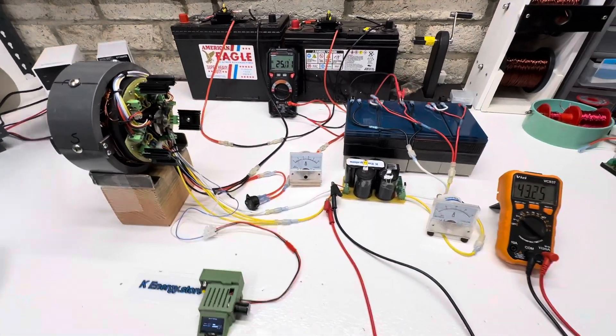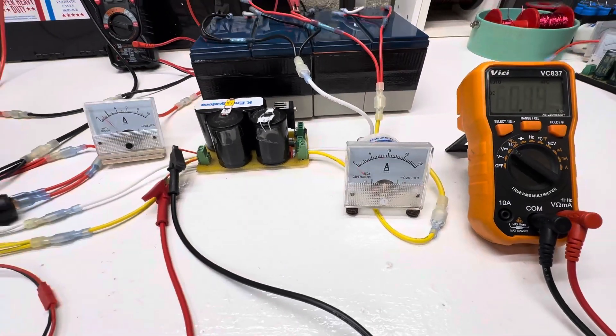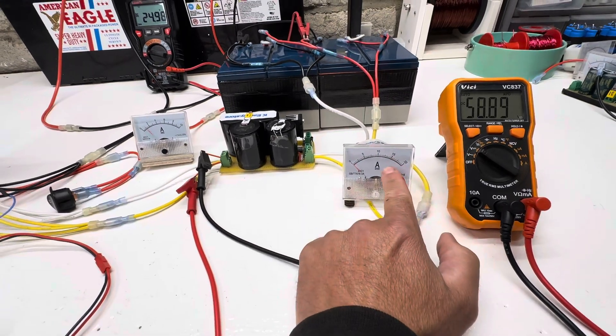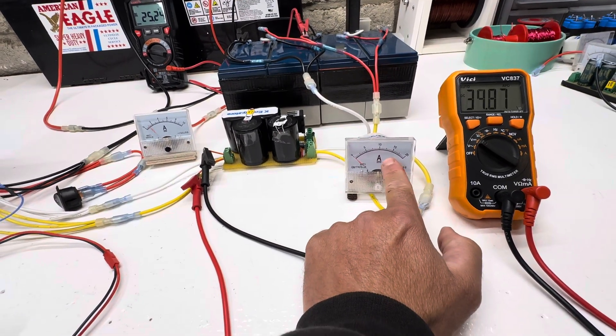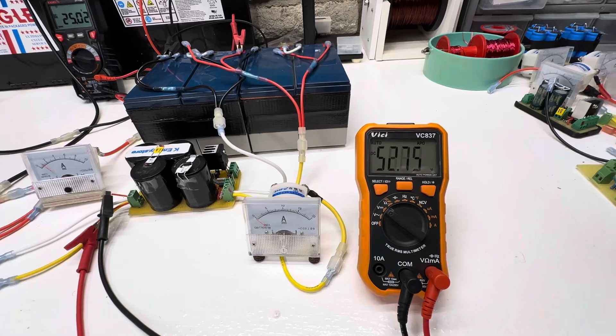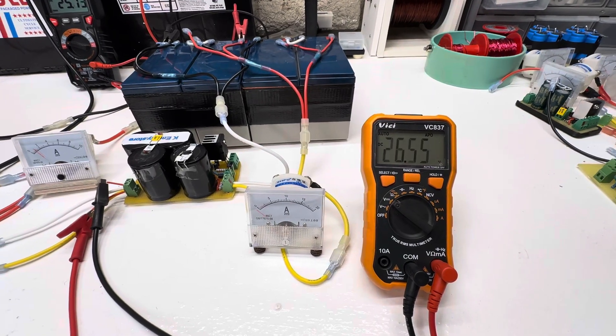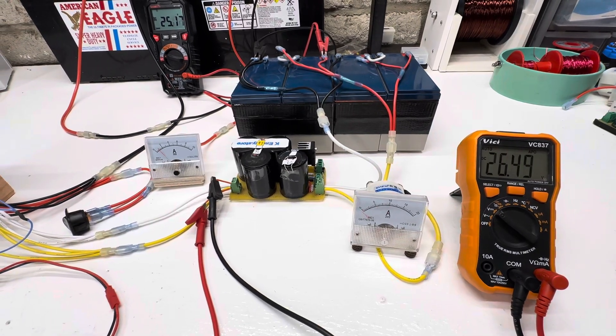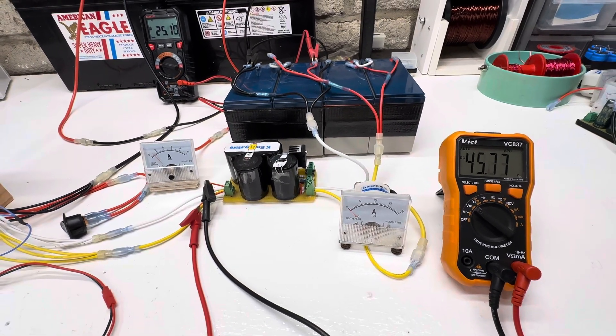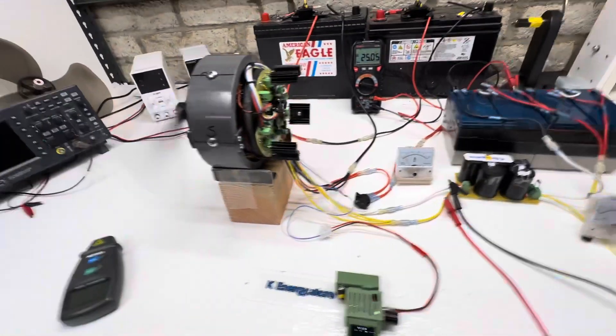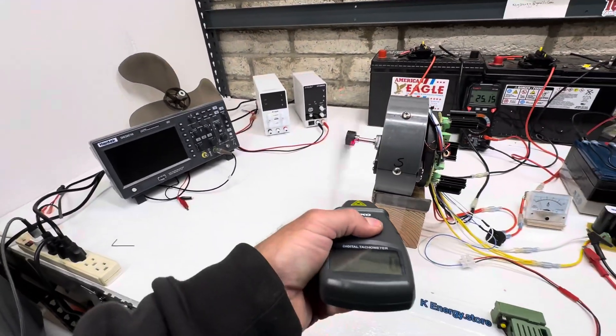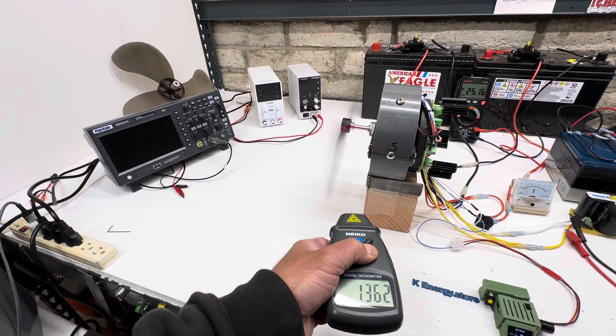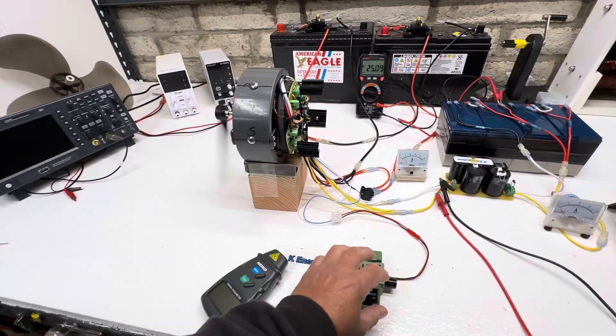Right now we're running one amp, and this cap dump is set up for full power. So every time it fires, it's about 12 amps and you can see the voltage goes up. It triggers right around 60 volts. That's a pretty big amount of power going into that second battery every time it fires. At one amp, our RPM is 1300. Let's bring it up to two amps.